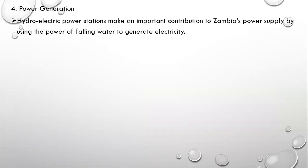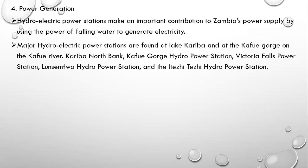Power generation is another important use. Hydroelectric power stations make an important contribution to Zambia's power supply by using the power of falling water to generate electricity. Hydroelectric power is one of the major sources of energy in Zambia. Major hydroelectric power stations are found on Lake Kariba and at the Kafue Gorge on the Kafue River.